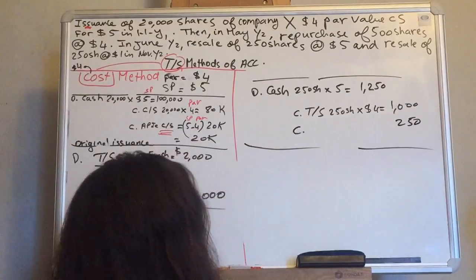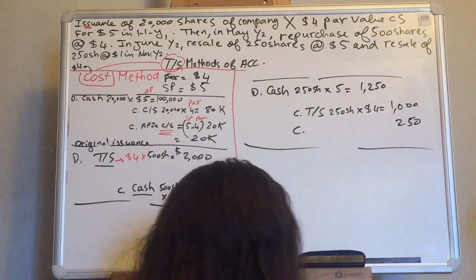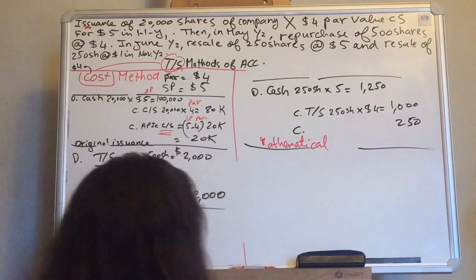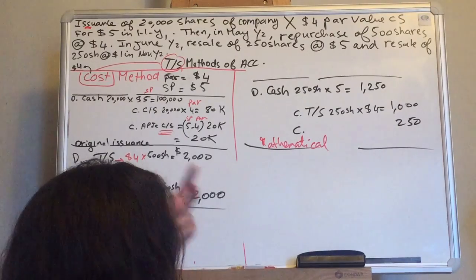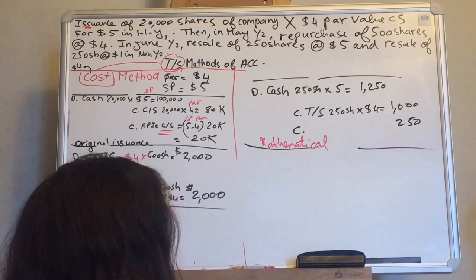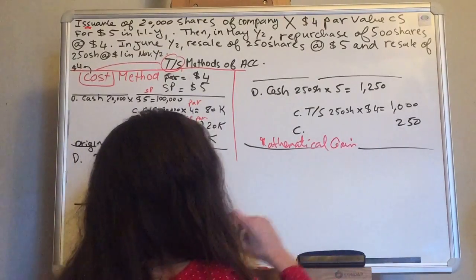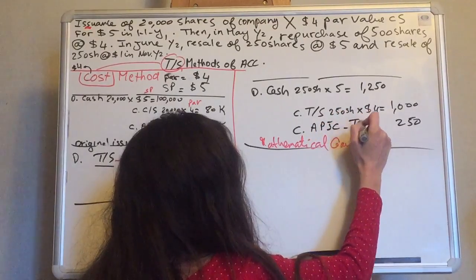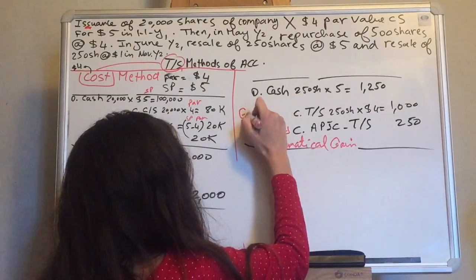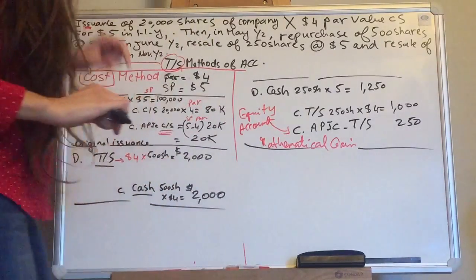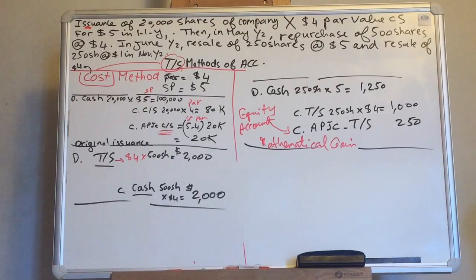On the credit side, I have a gain — but this is not a gain that hits the income statement. This is a mathematical gain, an equity account. Please do not confuse. Sometimes MCQs will try to trick you by asking what amount is reported on the income statement. The answer is zero, because this does not hit the income statement or the statement of earnings. It's an equity account reported on the balance sheet.